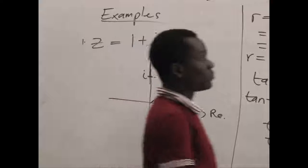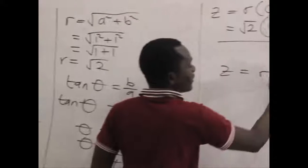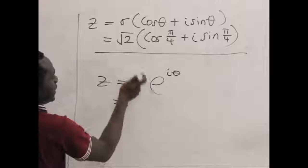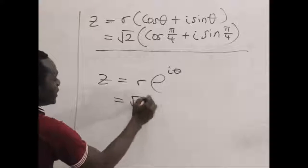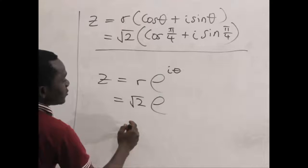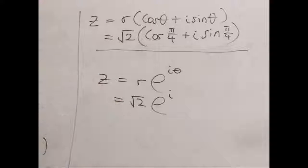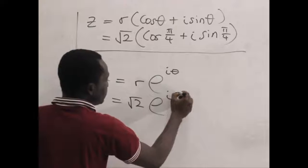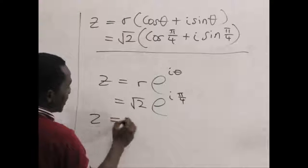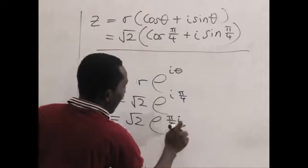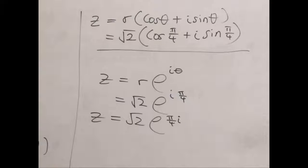And for the Euler form, we know the Euler form is the natural e to the power i theta. So we still have r as root of 2, so we place our root of 2 here, we maintain e, we maintain our i, and theta as we know is one fourth pi. So you can rewrite this as root of 2 e to the power i pi over 4. That is in Euler form.